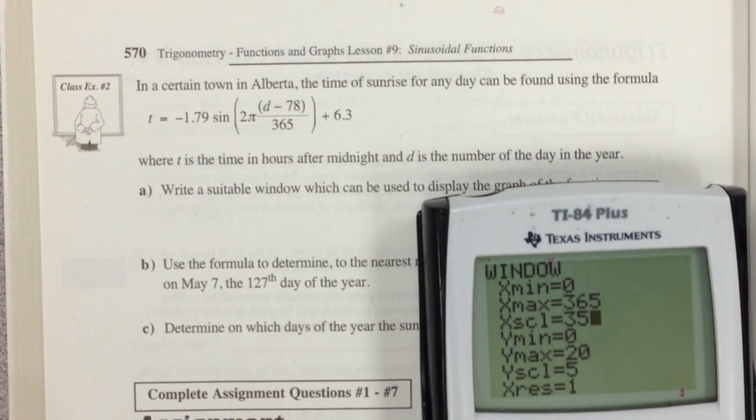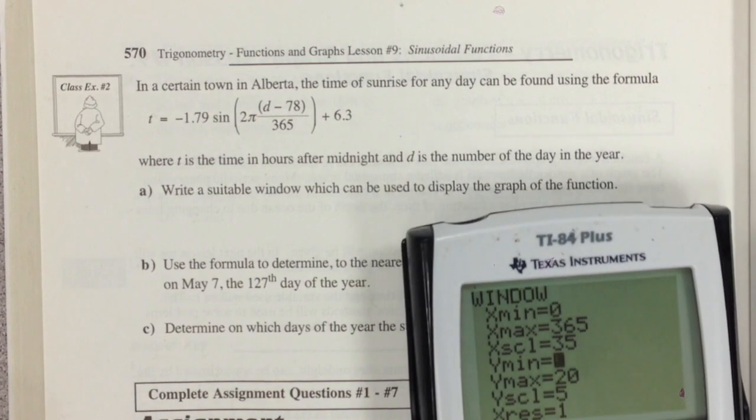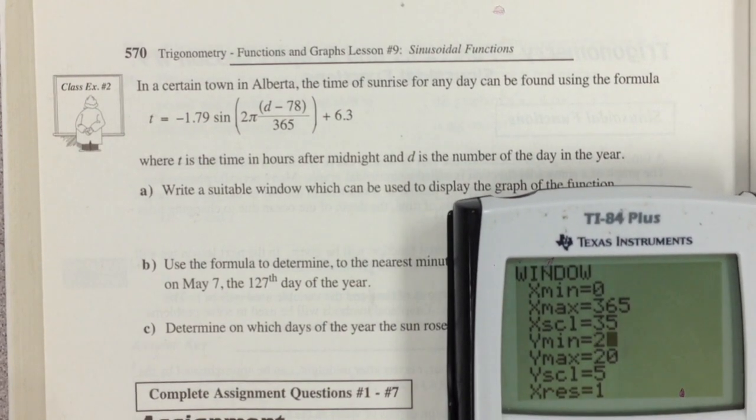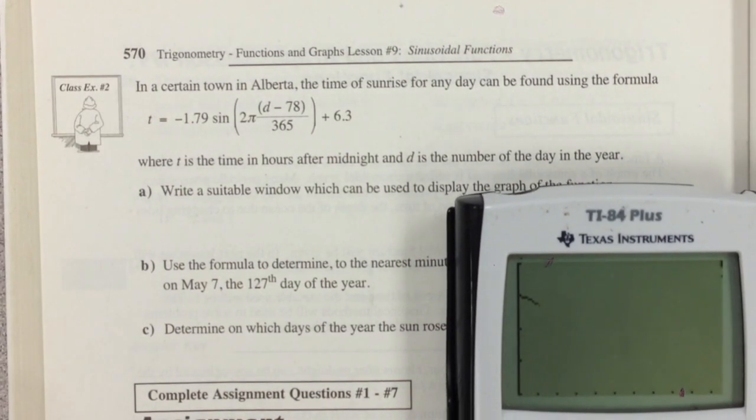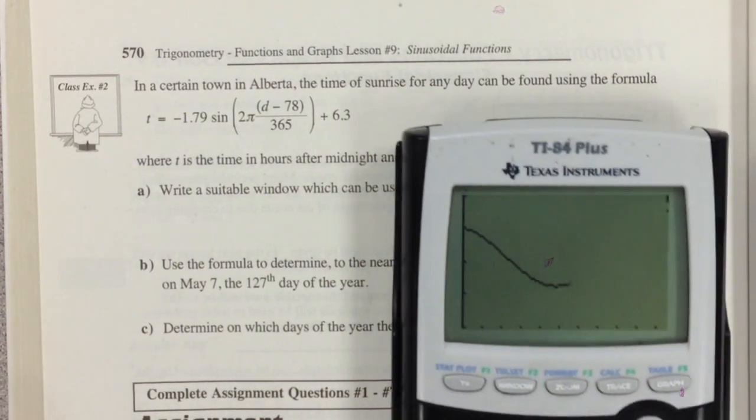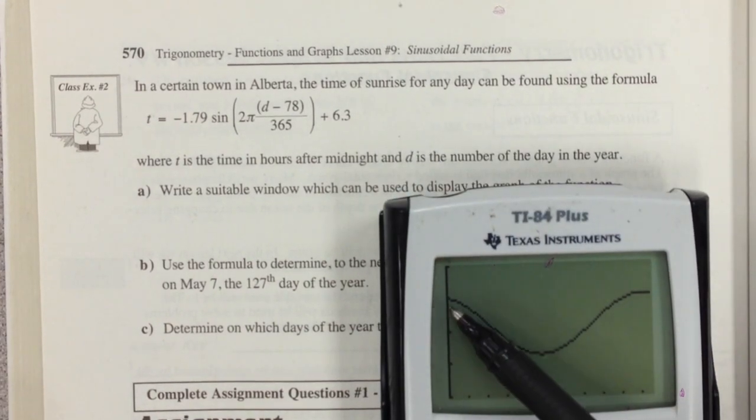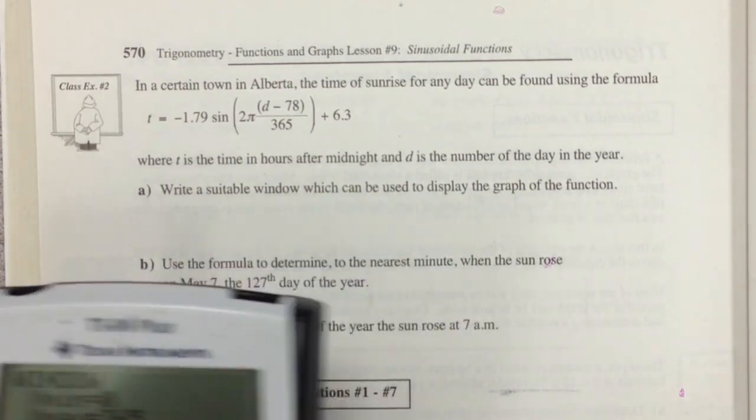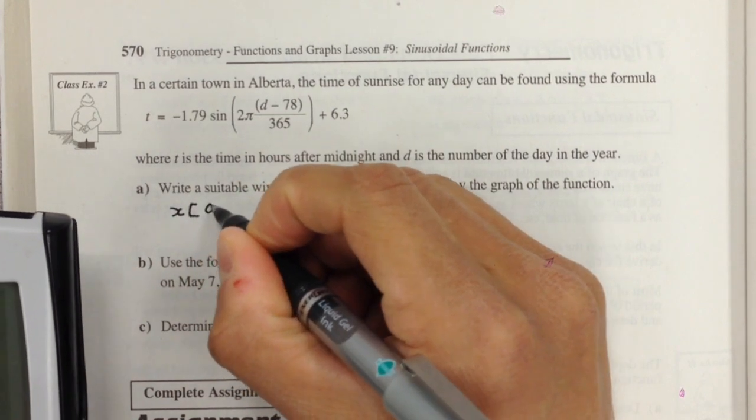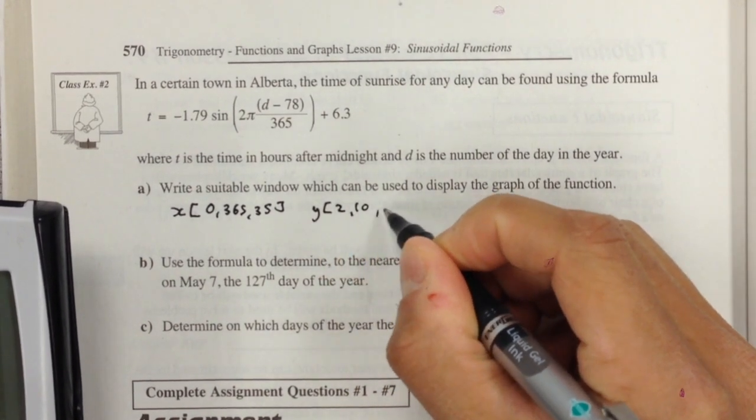That's a pretty big span that we'll be covering there. My y minimum value, we'll leave at... we'll just play around with this. Let's try 2 and then we'll try a standard setting of 10 and then we'll go up by 2 each time. Let's see how this works. Here's my sunrise. We have sunrise and then it goes down and then we come back up. So our window settings, it looks like that works pretty well. We had x: 0, 365, 35. My y settings were 2, 10, and 2.